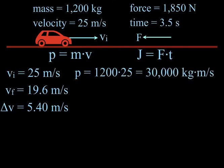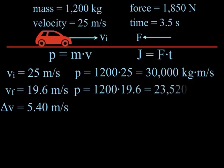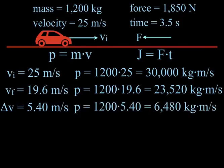The initial momentum is 30,000 kilogram meters per second. The final momentum at the final velocity of 19.6 is 23,520 kilogram meters per second, and the change in momentum is the change in the velocity times the mass of the car, which is 6,480 kilogram meters per second.